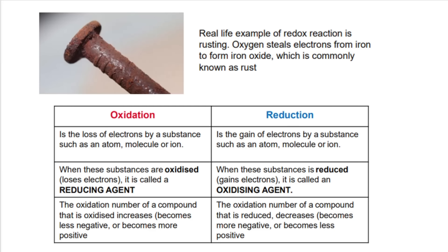A real-life example of a redox reaction is rusting. Oxygen takes electrons from iron to form iron oxide — that's what we call rust. Here's a summary table of oxidation versus reduction. It's also important to note that the oxidation number of a compound increases when oxidation occurs, and the oxidation number decreases when reduction occurs. I'll go over why and how this is the case in a moment.